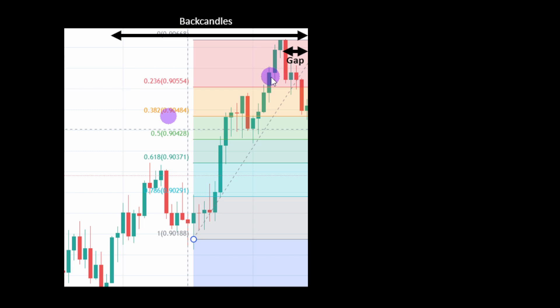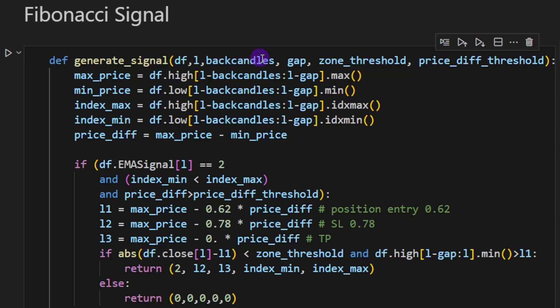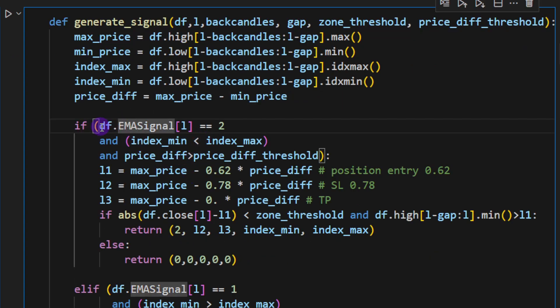First, let's check what are the gap and the back candles. The back candles are the number of candles to consider preceding the current candle. The gap is a limited number of candles that doesn't stretch back to the entire back candles number—it's just a small gap we need to include to detect the last pivot point.